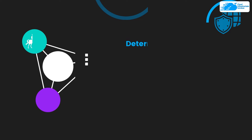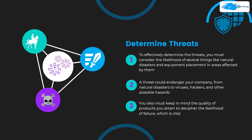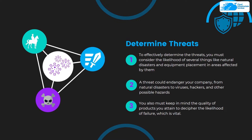At step number two we have determining the threats. To effectively determine threats you must consider the likelihood of natural disasters and equipment placements in areas affected by them. A threat could endanger your company from natural disasters to viruses, hackers and other possible hazards. You want to determine every possible threat, whether it be a natural disaster or a person who is going to hack into your organization. You must also keep in mind the quality of products you use to decipher the likelihood of failure.